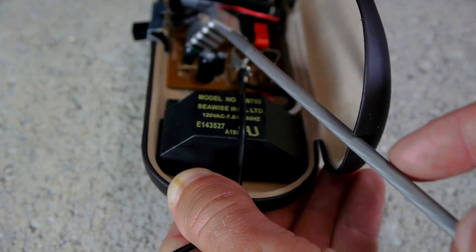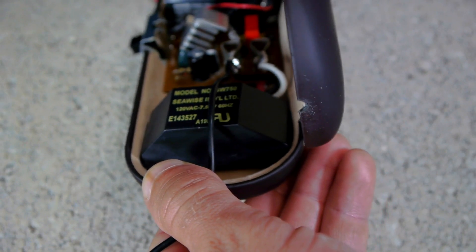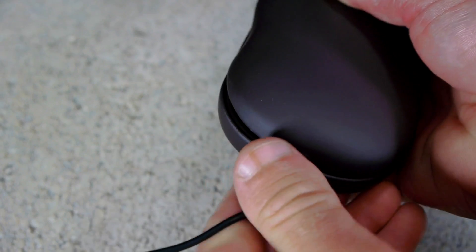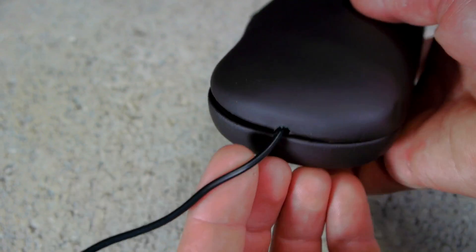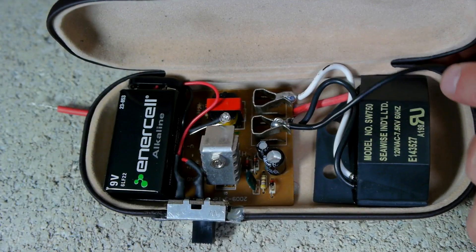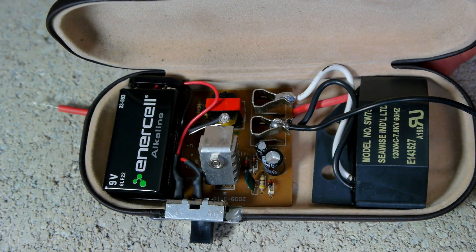Our final step is to either drill a hole or use a file to cut a groove into the bottom of our case for our black ground wire to extend out of. Finally the battery is inserted and this device is good to go.